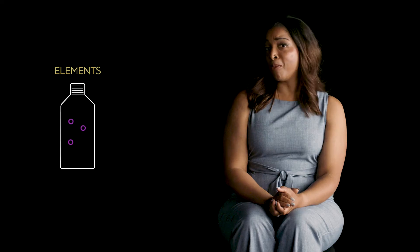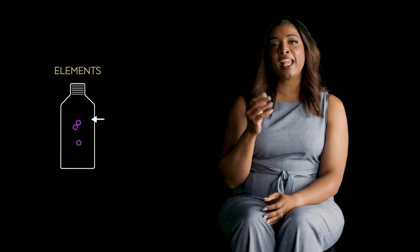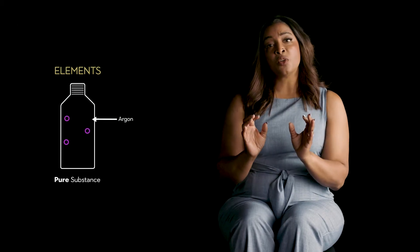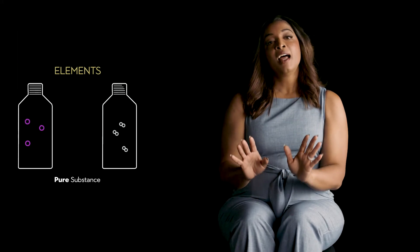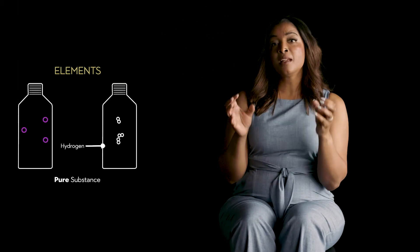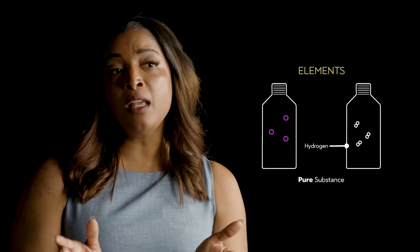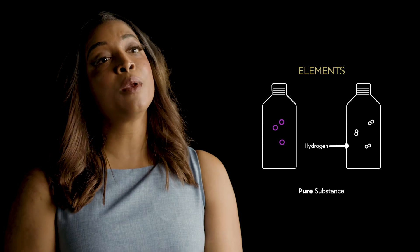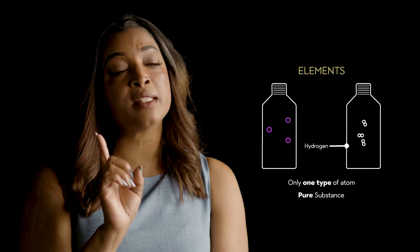Let's begin by examining the simplest form of matter: elements. Picture a container filled with single balls. Each ball represents an individual atom of, let's say, argon. These atoms are identical, forming a pure substance known as an element. Now, let's have a look at another element: hydrogen. Two hydrogen atoms can bond together to form hydrogen gas, a molecule. Despite being composed of molecules, hydrogen gas remains an element because all of its particles are made up of only one type of atom.